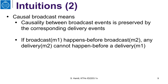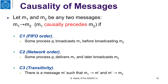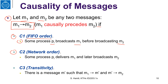We can now define causality between messages. We say M1 causally precedes M2 if one of the following conditions is satisfied. The first condition is called FIFO order: some process PI broadcasts M1 before broadcasting M2. The second is network order: some process PI delivers M1 and later broadcasts M2 — in this case M1 causally precedes M2. The relation is also transitive: M1 causally precedes M2 if there exists a message M' such that M1 causally precedes M' and M' causally precedes M2.